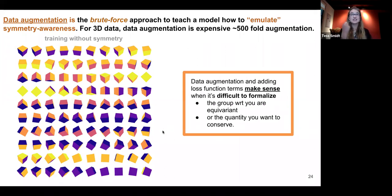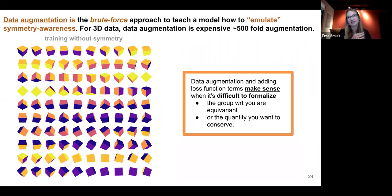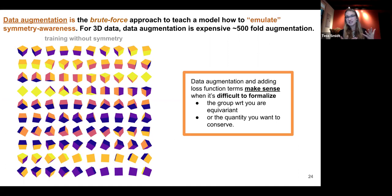Data augmentation does make sense in many cases — particularly if it's very difficult to formalize when two things are similar. If you can't formally show how you'd transform one thing into another, or if there's some quantity you want to conserve that's hard to articulate as a group or a transform — by all means add that to your loss function or use data augmentation. Especially things that are messy — approximately similar things, perturbations, and so on. These cases don't tend to come up in my work since I'm always dealing with geometry, but it can be totally appropriate for your needs.